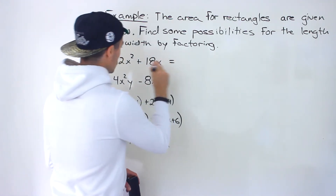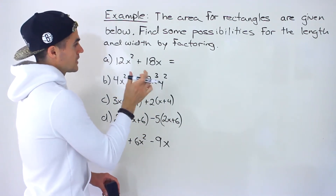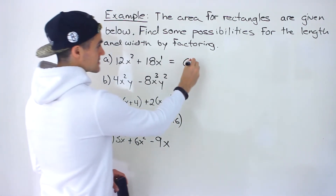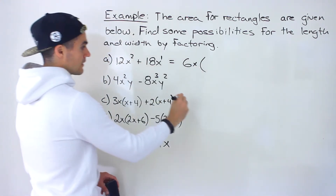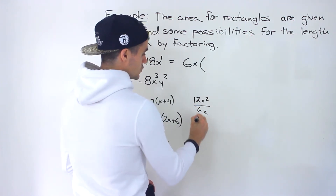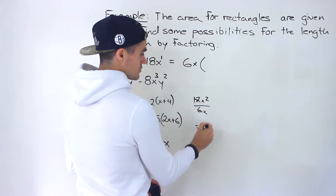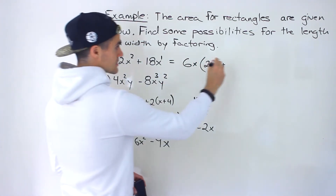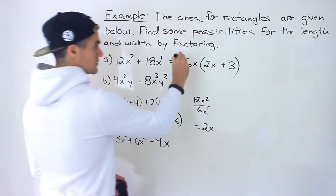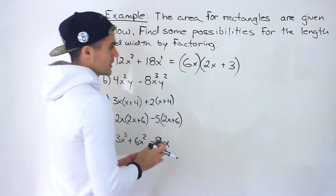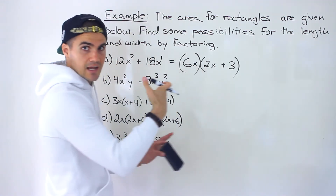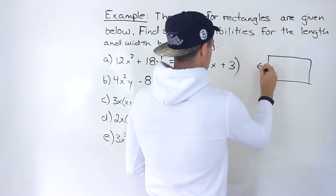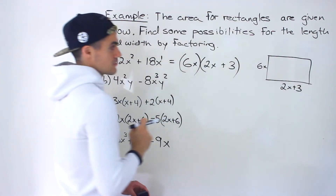For part A, we have 12x squared plus 18x. The greatest common factor between 12 and 18 is 6, and x is common in both with the lowest exponent being x to the 1. So we take out 6x, leaving 12x squared divided by 6x which gives 2x, plus 18x divided by 6x which gives 3. So one possibility is width = 6x and length = 2x plus 3.